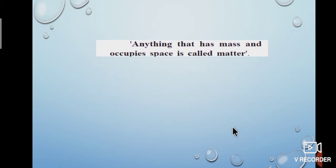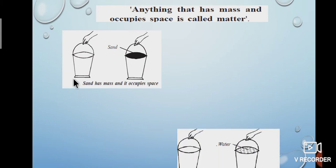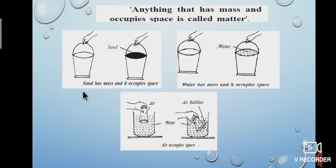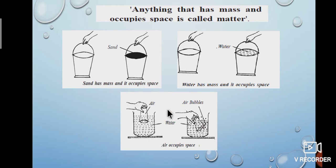Let us see some more examples. Lift an empty bucket and feel the weight. Now fill it with sand and lift it again — you feel it heavier. Sand has occupied the space of the bucket, so sand has mass and occupies space. If you fill it with water, water also occupies the space of the bucket, confirming that liquids also occupy space. See the third picture: fill half a glass with water, take a glass tumbler and plunge it into the water. Water does not enter the tumbler beyond the level. If you tilt the tumbler, air bubbles come out and water enters the tumbler. These three examples confirm that matter has mass and occupies space.